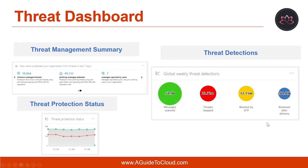The global weekly threat detection widget shows how many threats were detected in email messages over the past seven days. This includes the number of email messages scanned multiplied by the number of recipients. Then we have threats stopped — the number of email messages identified as containing malware multiplied by the number of recipients. The next one is blocked by ATP, calculated by the number of email messages blocked by ATP multiplied by the number of recipients.